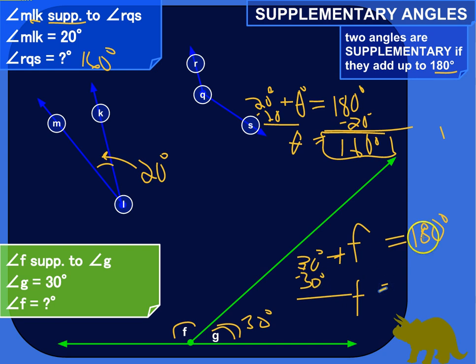Since we subtracted 30 over there, we have to subtract 30 on the other side of the equation so that it stays balanced. 180 minus 30 is 150. 0 minus 0 is 0. 8 minus 3 is 5. 1 minus 0 is 1. So 150. 150 degrees.